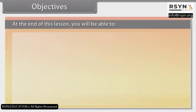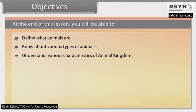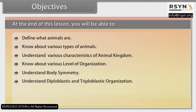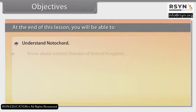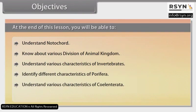At the end of this lesson, you will be able to: define what animals are; know about various types of animals; understand various characteristics of animal kingdom; know about various levels of organization; understand body symmetry; understand diploblastic and triploblastic organization; know about coelom; understand segmentation; understand notochord; know about various divisions of animal kingdom; understand various characteristics of invertebrates; identify different characteristics of porifera; understand various characteristics of cnidaria; identify different characters of ctenophora.